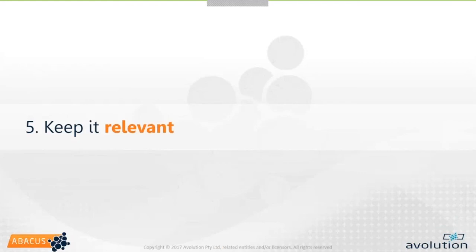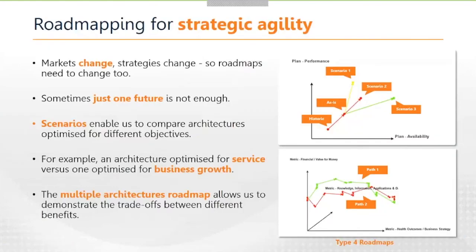The fifth success factor is keeping it relevant — which is another way of saying we need to be agile. When talking about agility we're really talking about it at two levels. The first level is what we call strategic agility — your road map should be taking you closer to a set of objectives, which are the measurable components of your business strategy. But business strategy changes, driven by things like market changes or regulatory changes. Sometimes you're at risk of putting all your eggs in one basket with a road map purely driven by the need for cost savings, only to find the market is more buoyant and your business is looking for growth over cost savings.